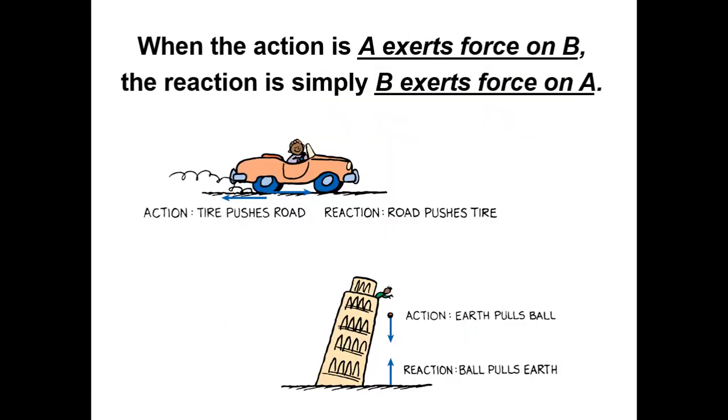When the action is A exerts force on B, the reaction is simply B exerts force on A. So the action here is the tire pushes the road, the reaction is the road pushes the tire. And then there's the Leaning Tower of Pisa at the bottom. The action is Earth pulls the ball, the reaction is the ball pulls the Earth. They are equal but opposite.